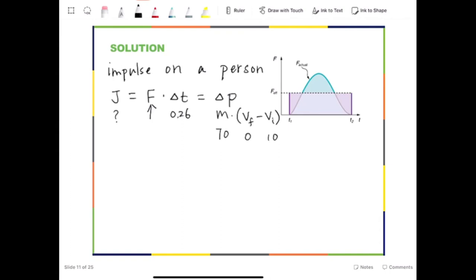Now the strategy is clear. To find the force, we can use the change in momentum divided by change in time. Let us plug numbers. Delta P is going to be 70 times 0 minus 10 divided by 0.26. This will have a number of negative 2.7 times 10 to the third newtons.